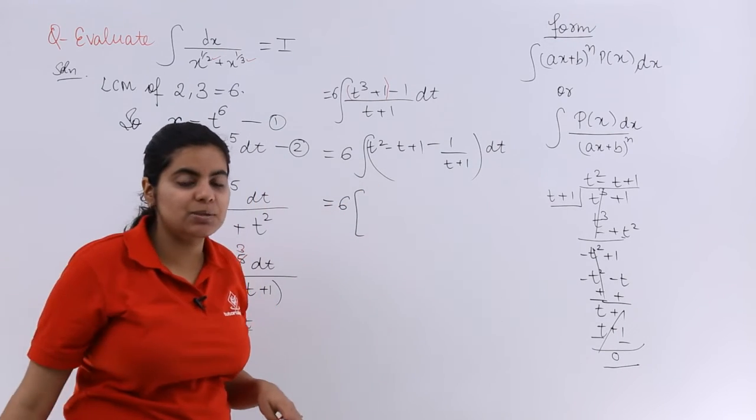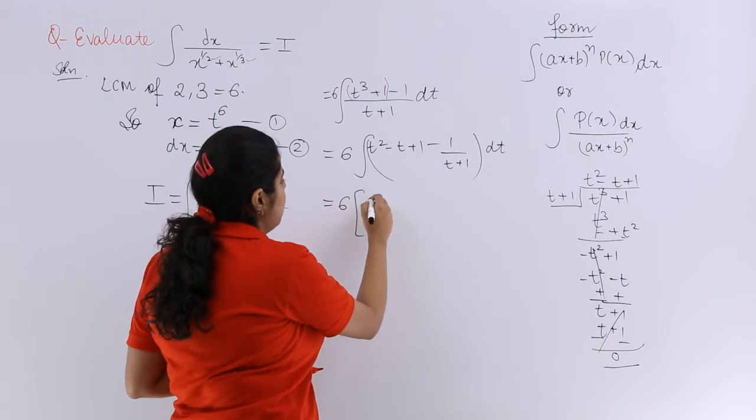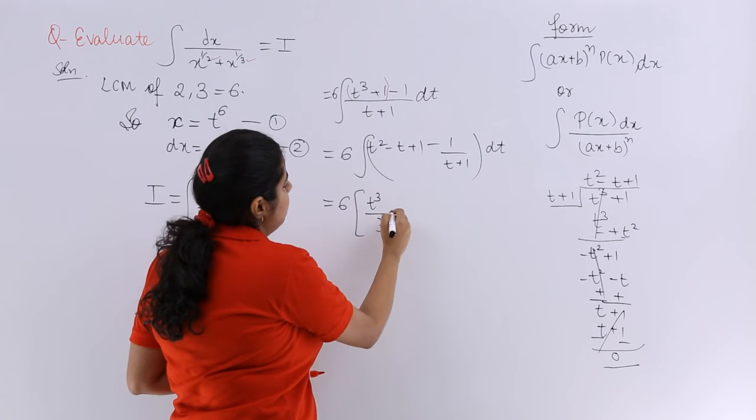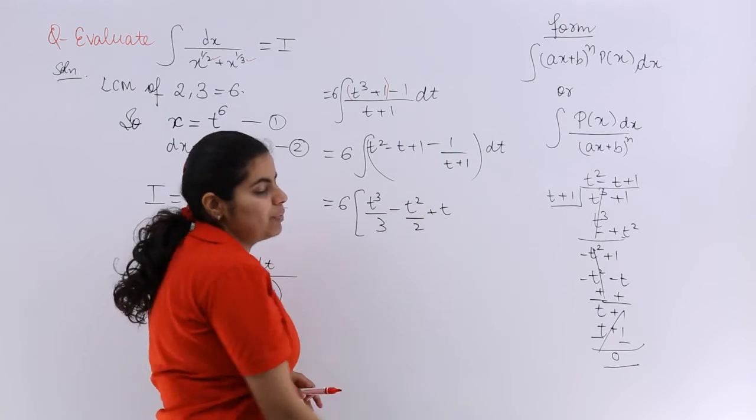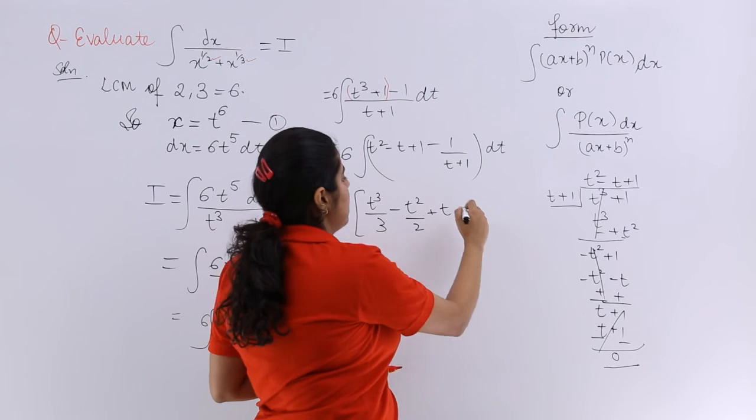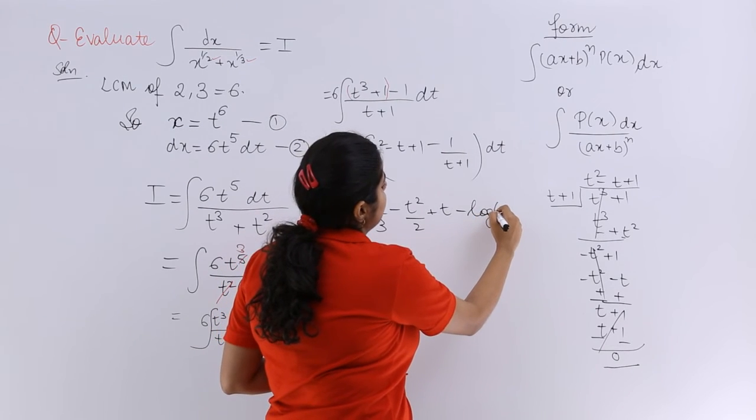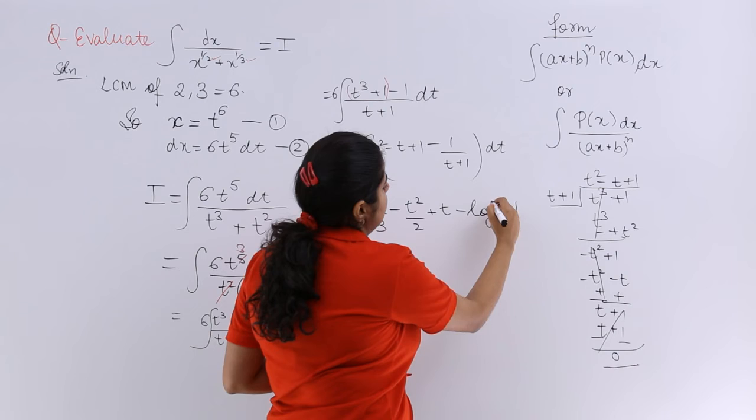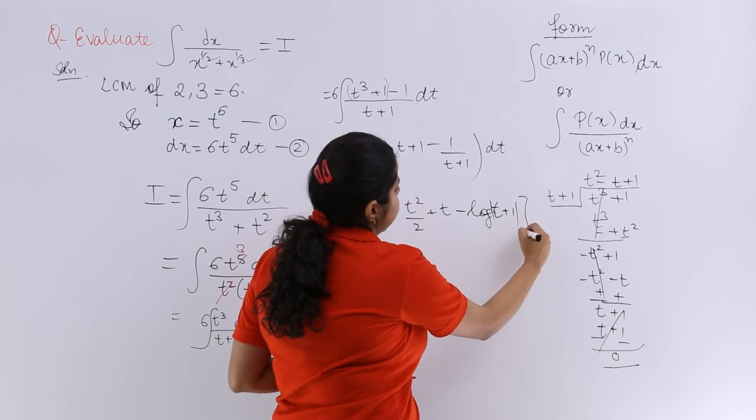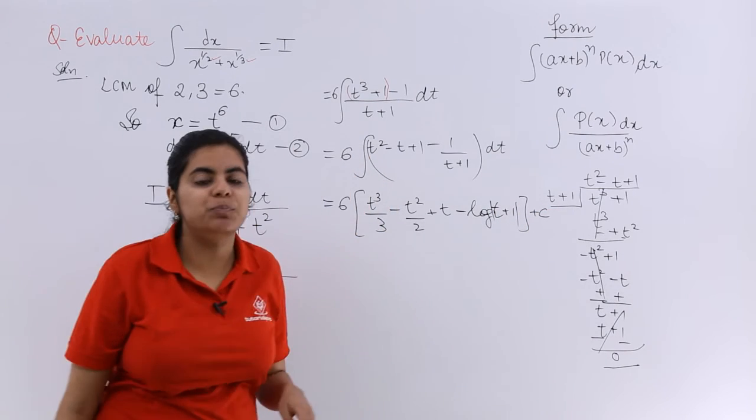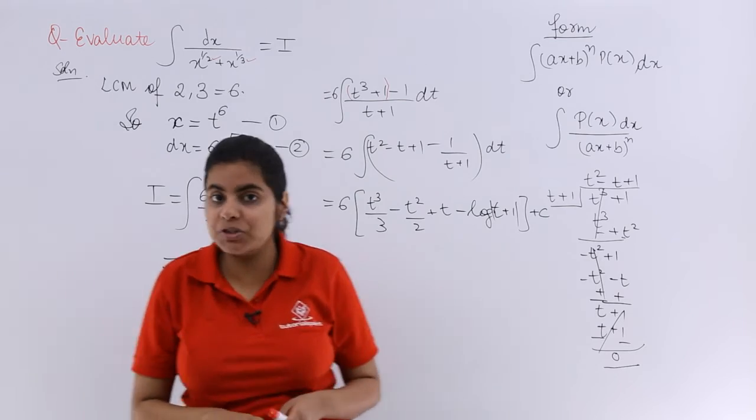Here outside it should be 6. What is the integration of t square with respect to dt? t cube by 3. It is minus t square by 2. It is plus t. You know how I have done it. Minus log t plus 1 plus C. And now let's put the value of t from which equation? From the equation number 1.